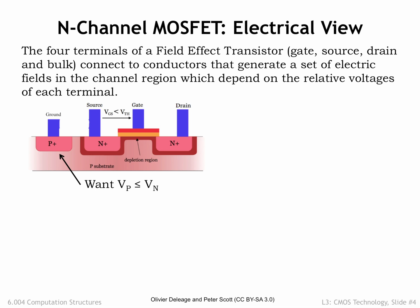The MOSFET is controlled by the difference between the voltage of the gate, VG, and the voltage of the source, VS, which, following the usual terminology for voltages, we'll call VGS — a shortcut for saying VG minus VS.